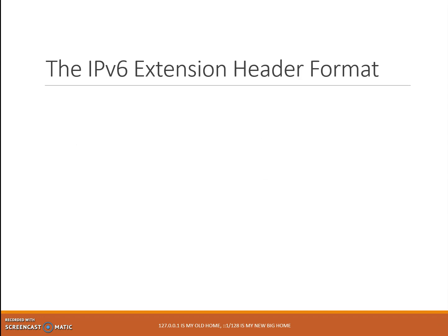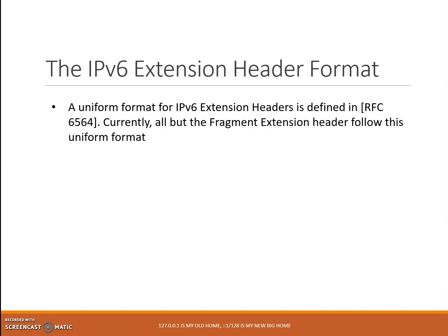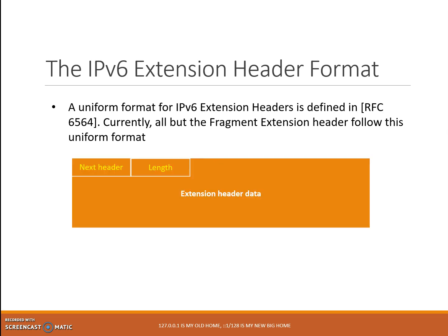The IPv6 extension header format. A uniform format for IPv6 extension headers is defined in RFC 6564. Currently, all but the fragment extension header follow this uniform format. The next header field identifies the type of header immediately following this extension header, while the header extension length field provides the length of the extension header in octet units, not including the first eight octets, and the rest of the bytes will be the data of the extension header.